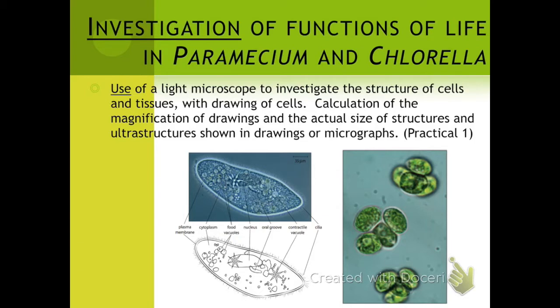We are going to be doing a lab where you investigate paramecia and chlorella cells. Paramecium is a small single-celled organism, it's an aquatic organism, and it is a eukaryote or an animal cell. Chlorella is also a eukaryote, but it is a plant-type cell — a photosynthetic cell that contains chlorophyll.